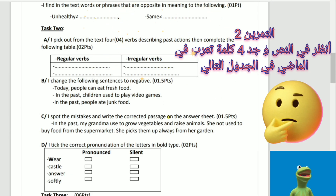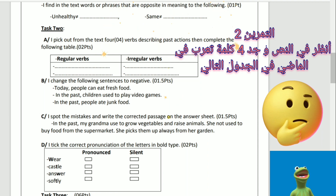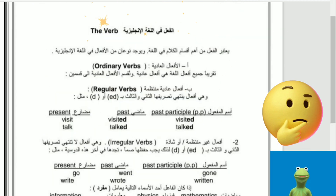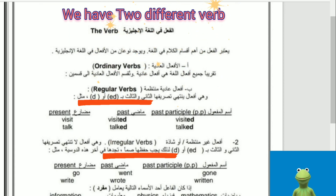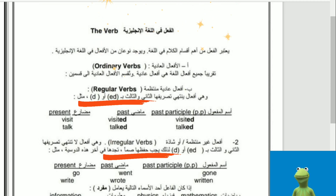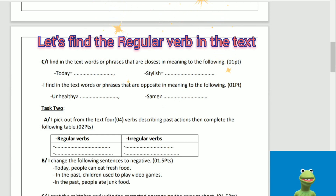Task two: I pick out from the text four verbs describing past actions, then complete the following table of regular verbs and irregular verbs. Let's do some revision. Regular verbs end with '-ed.' Irregular verbs change form, so we have to learn them by heart. Let's find the regular verbs in the text. I can see the verbs 'used' and 'changed.'